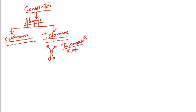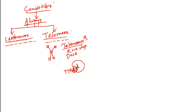Telomerase is an RNA-dependent DNA polymerase. It is a protein that carries a short RNA sequence, which polymerizes the TTAG sequence multiple times. There will be multiple TTAG repeats at the end of each chromatin. This is how the telomere protects the DNA end.